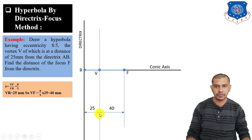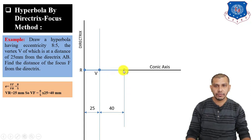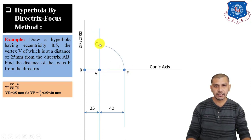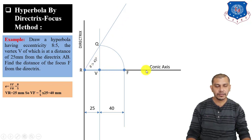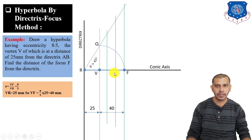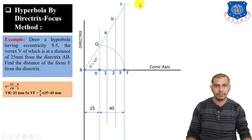Draw the directrix and conic axis. Mark vertex V at 25 mm from the directrix, and focus F at 40 mm from V. Draw a perpendicular to the conic axis from V, measure VF on the compass, and from V as center give an arc to get point Q. Connect Q to R — the angle of RQ will be greater than 45 degrees for hyperbola. Make divisions 1, 2, 3 from V toward F and draw perpendicular lines; their intersections with RQ are A, B, C.